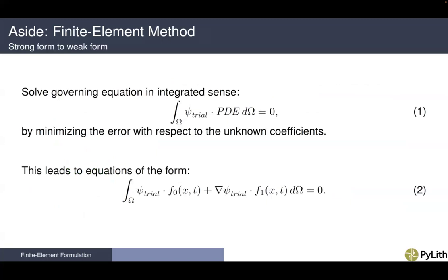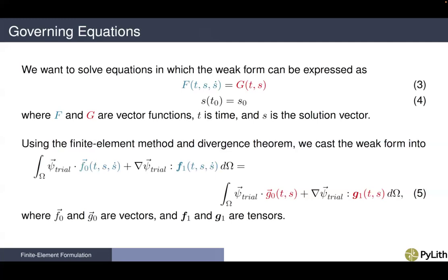In implementing the finite element method for our case, we are solving the governing equation in an integrated sense. We multiply our partial differential equation by a trial function and integrate over the domain, and we want to minimize the error with respect to the unknown coefficients by setting that integral equal to zero. This leads to equations of the form where we have a trial function dotted with some function, and a gradient in the trial function also dotted with another function integrated over the domain, set equal to zero. In general, we want to solve equations in which the weak form can be expressed as F(t, s, s_dot) = G(t, s), with initial conditions, where F and G are vector functions, t is time, and s is a solution vector.